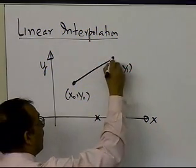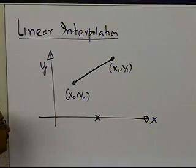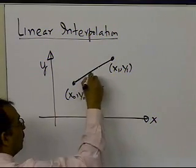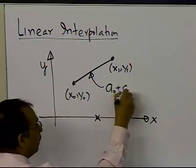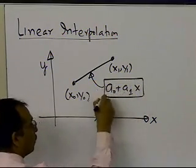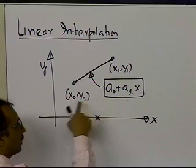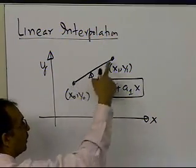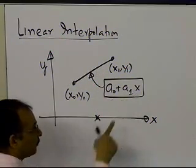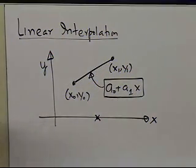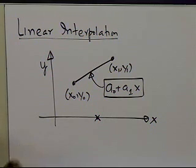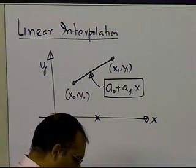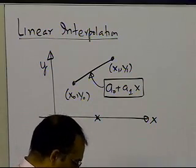So this is the line you'll be drawing — a straight line of the form a0 plus a1*x. What you have to do is find what a0 and a1 are from the two given values, and then you can find the value of y from this straight line for any value of x. The best thing to do is to choose an example, and that way we'll be able to figure out how to do this linear interpolation.